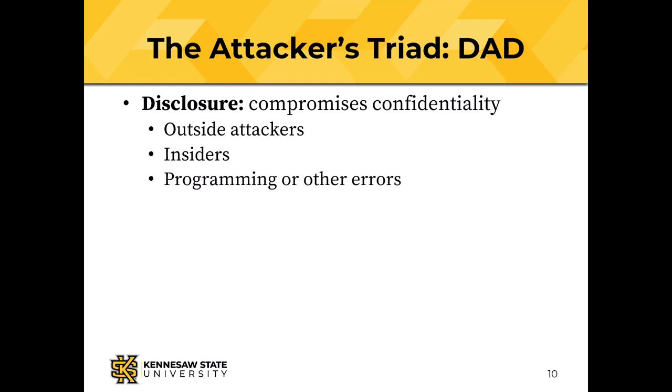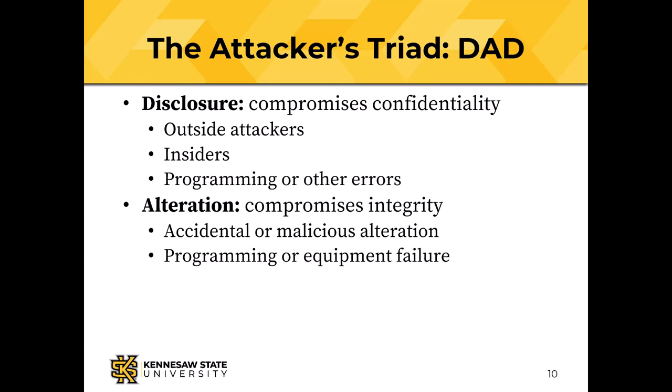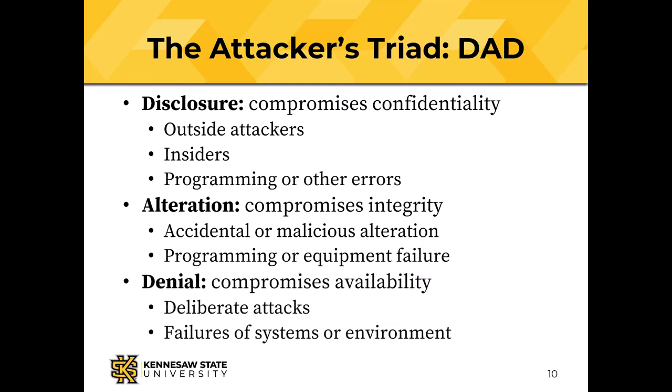The attackers also have a triple-barreled set of goals. Disclosure compromises confidentiality — it can result from outside attackers, insiders, or plain error. Alteration compromises integrity — it can be accidental, malicious, or result from programming or equipment failure. Finally, denial compromises availability — there can be deliberate denial-of-service attacks, or failure of systems or environment. So we have three important properties: CIA — confidentiality, integrity, and availability — and on the other side: disclosure, alteration, and denial.